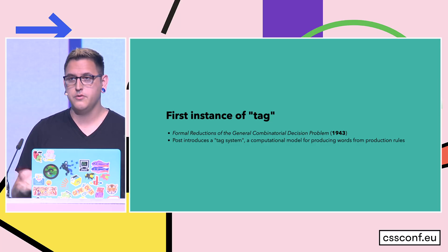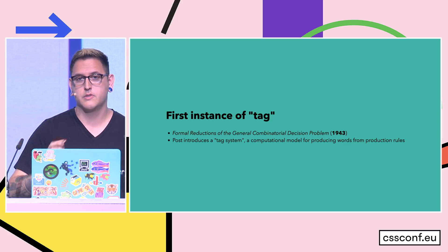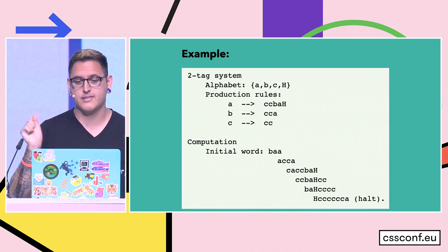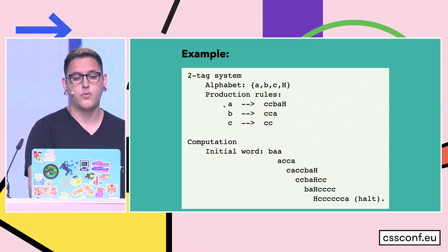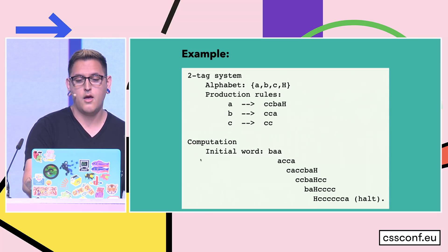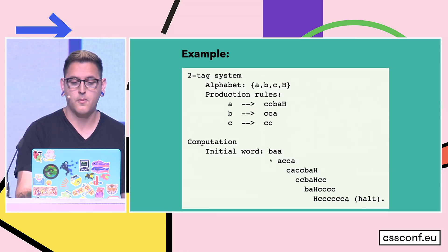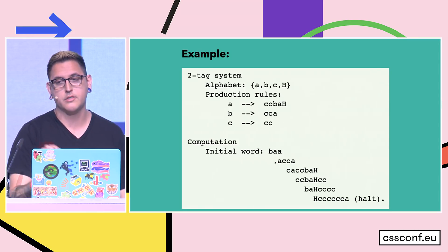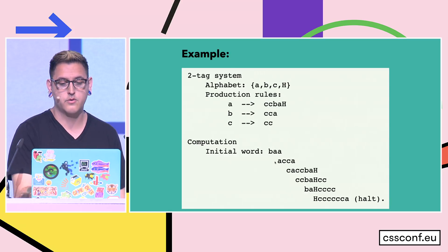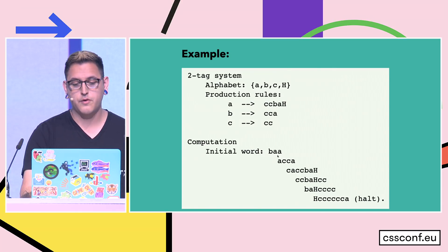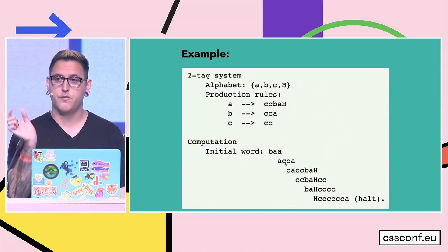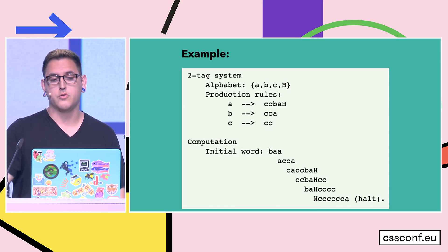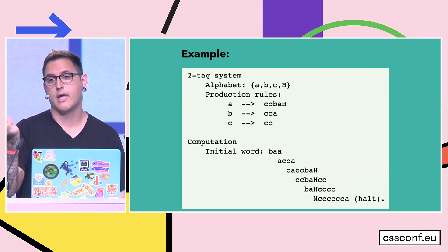The paper describes a computational model for producing arbitrary words from production rules. Here is a very minified example: if we have a simple alphabet with four letters — A, B, C, and H — and we say that whenever we see an A we add on the string C, C, B, A, H, and whenever we see a B we add on C, C, A, and so on — then we can take any initial word and start transforming it. Starting with B, A, A, we look at the first letter and see that B goes to C, C, A, and tack that on. Each time we pick a production rule, we truncate the front of the string by some amount of letters. The fundamental thing is that you keep tacking on to the end of the string until you hit a letter with no production rule, or reach a chain too small to delete from.